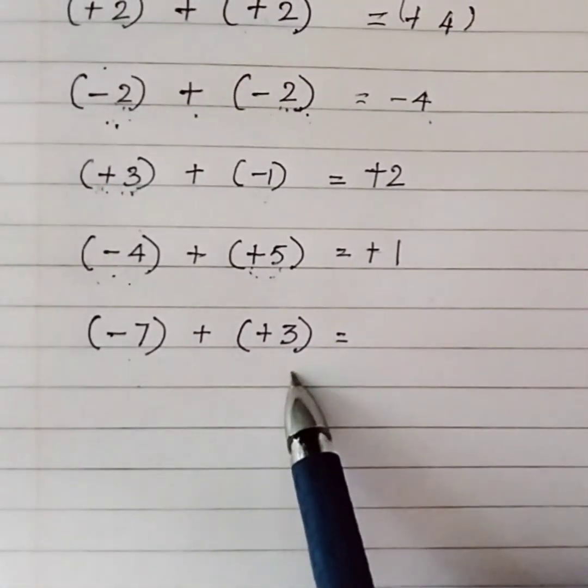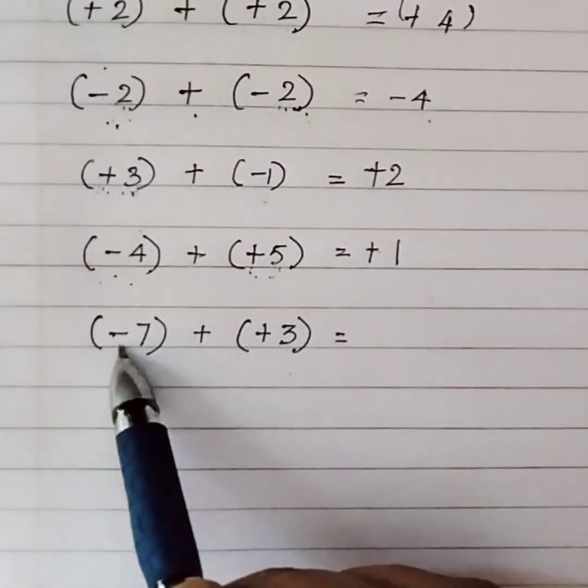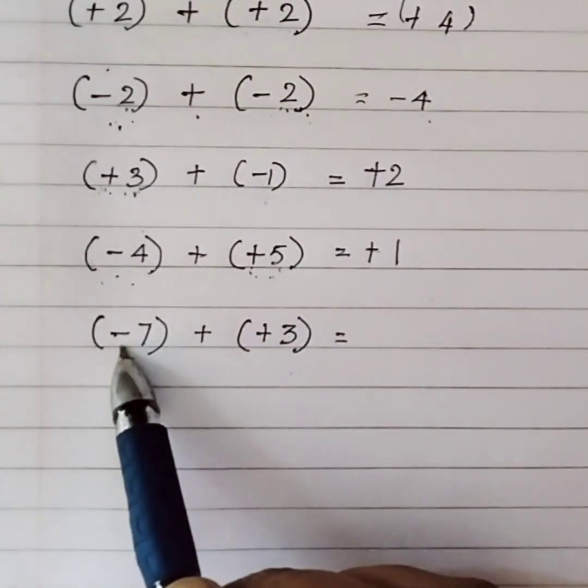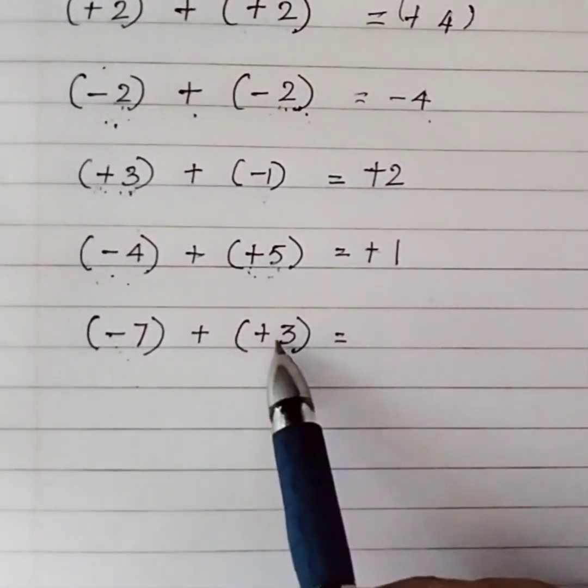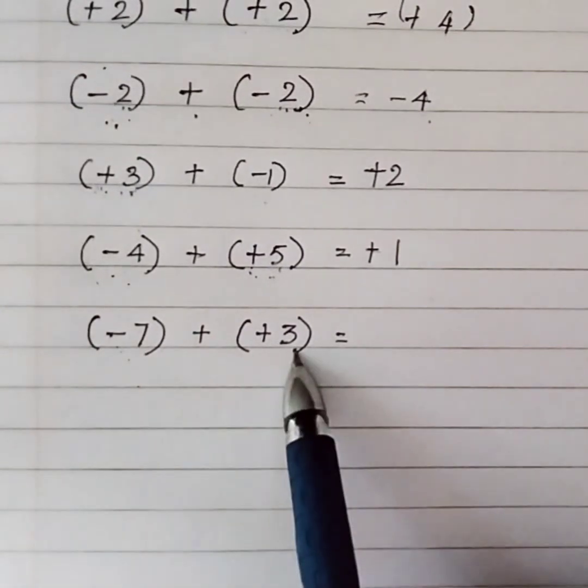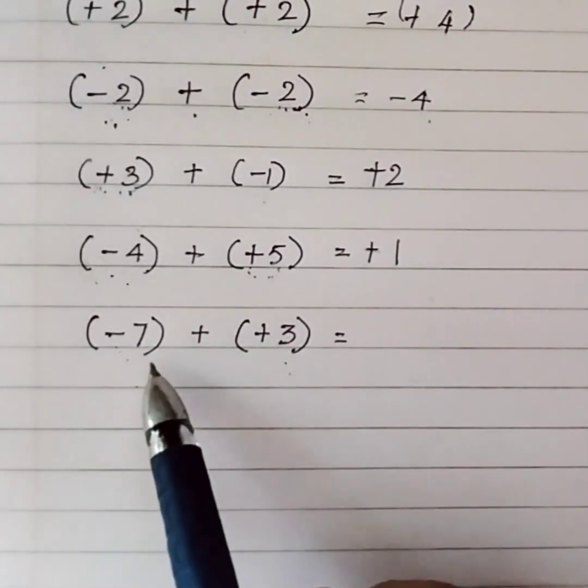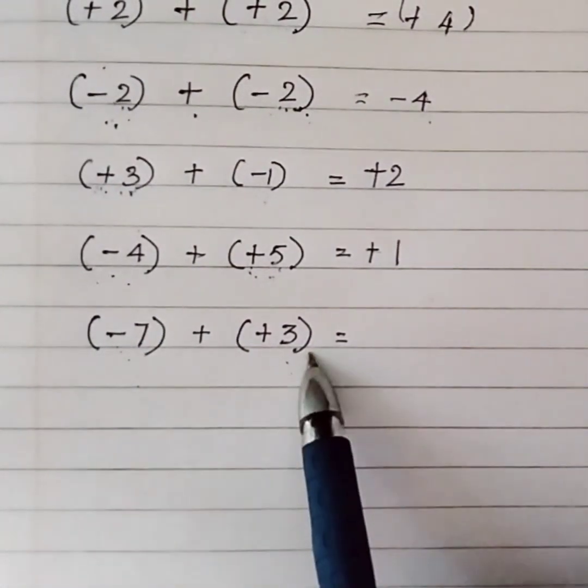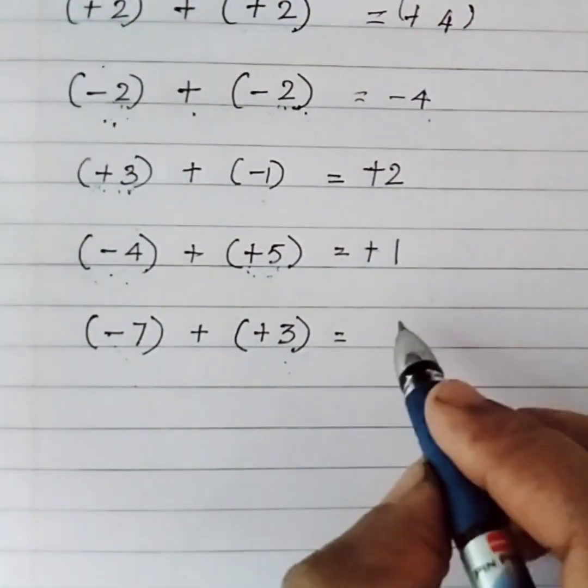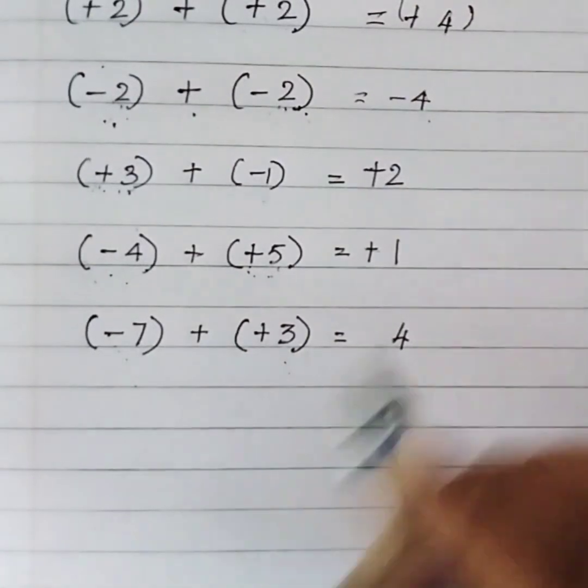(-7) + (+3). Each has different signs, so we subtract. What is 7 minus 3? It's 4. Writing 4, we place the sign of the larger number. The answer is -4.